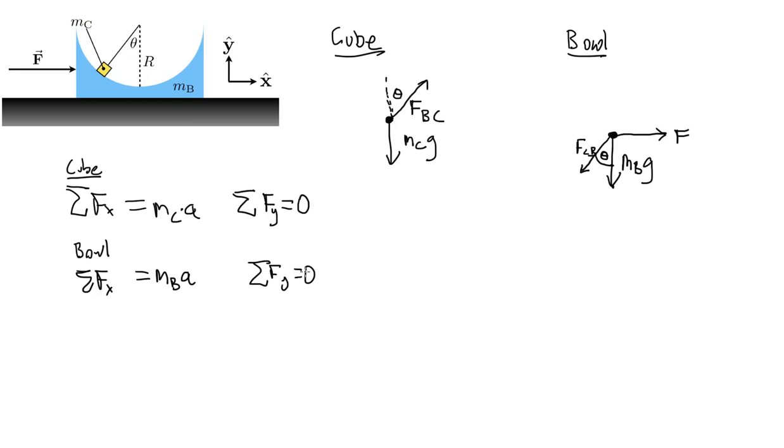Now, we can go ahead, we don't know the angle theta, we just leave it as a variable. So I'm going to go ahead and do the sum of the forces for the cube is in the x direction. So I'm going to call this equation 1, and then this will be equation 2.